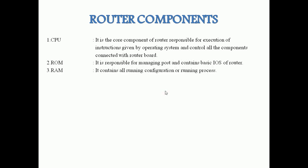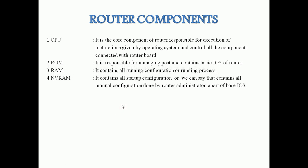The third component is RAM, which we also use in computers. It contains all the running configuration and running processes of the router. The fourth component is NVRAM — it contains all startup configuration. You can think of it like a hard disk in a computer: it stores all manual configuration done by the administrator and a part of the base IOS system.